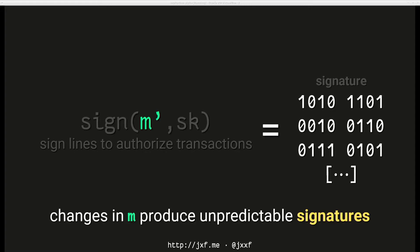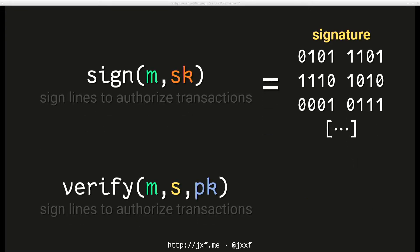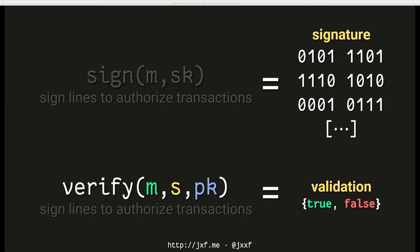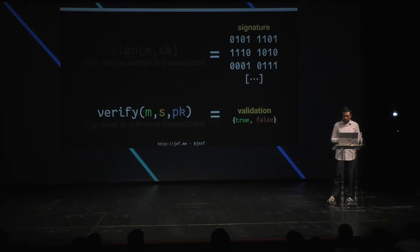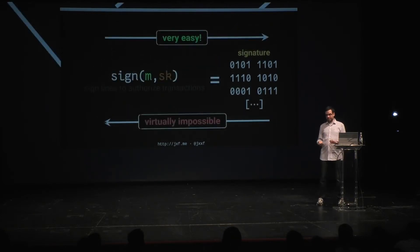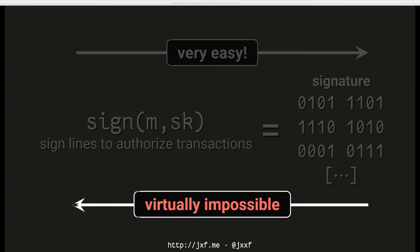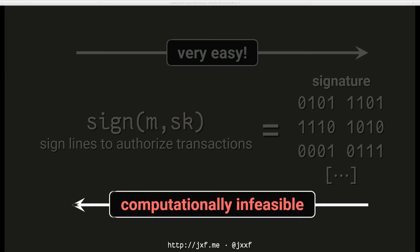Since the secret key is secret, Bob or Carol can't make a valid signature for a message that isn't theirs. To verify, you take the signature, the message, and the public key — combine them — and get an answer: yes, this was signed by this person, or no, it wasn't. It's really easy to generate a signature, but it's really hard given a signature to recover the message and secret key. Cryptographers call this computationally infeasible — the only way is to try every possible combination, which takes so long you give up.